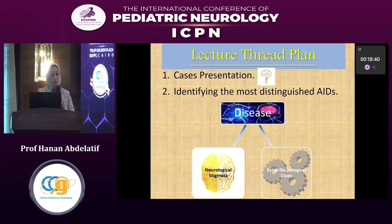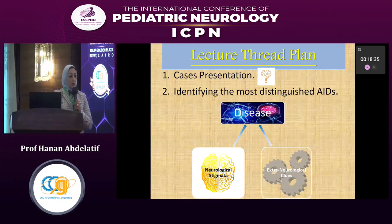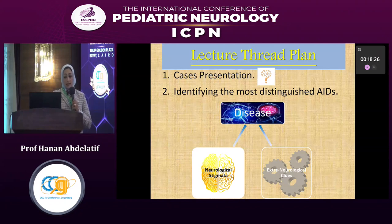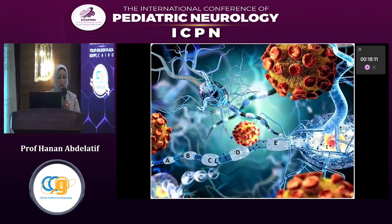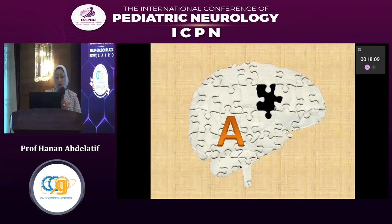Our lecture plan covers the objectives of the lecture. We will present cases and then identify the most distinguished auto-inflammatory diseases through neurological stigmata and extra-neurological clues. Following the neuronal signals, I am going to group the most important syndromes into five groups — A, B, C, D, and E — in a precise way in order to stick to the time.